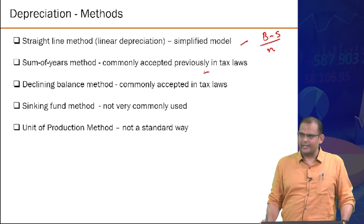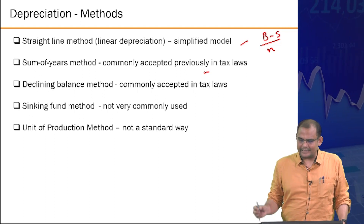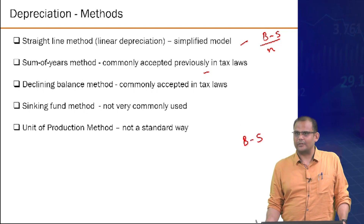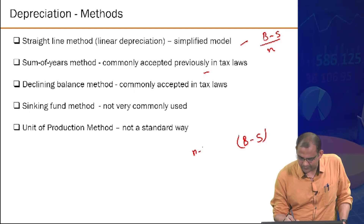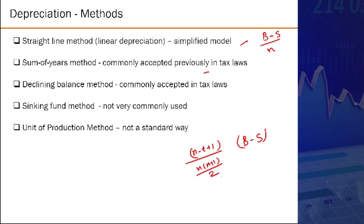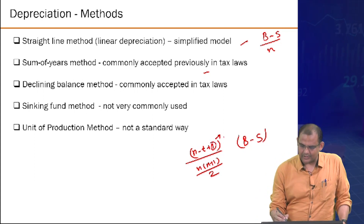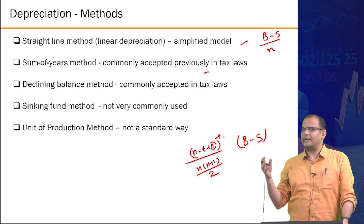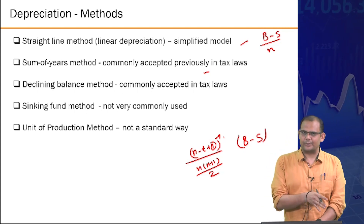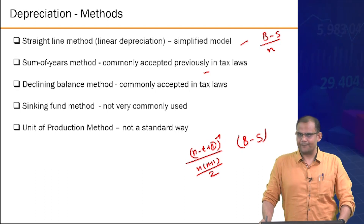The sum of years digits method was popular in a previous tax regime. B minus S is the total amount to distribute; the fraction is (N minus t plus 1) divided by N(N+1)/2. The denominator is the sum of digits, and the numerator adjusts for the beginning-of-period convention, hence the term N minus t plus 1.